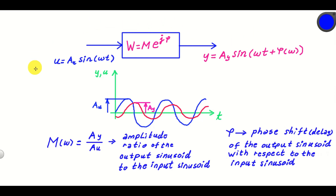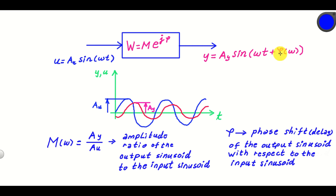Here you can see the physical interpretation of the magnitude and phase functions. This block diagram represents our physical system. We assume that our system is asymptotically stable. The input to the system is a sinusoid signal with the amplitude A_u and with the angular frequency omega. The output of the system is again a sinusoid signal with amplitude A_y, with the same frequency as the input signal and with the phase delay phi of omega.